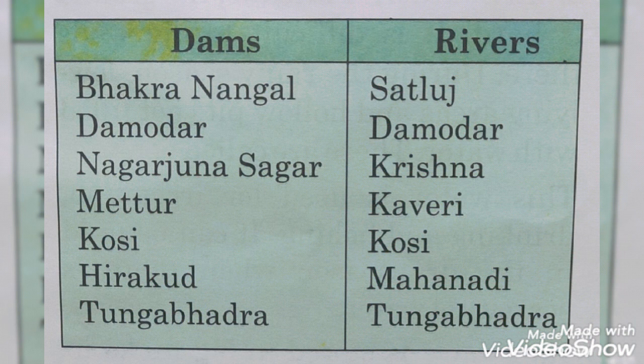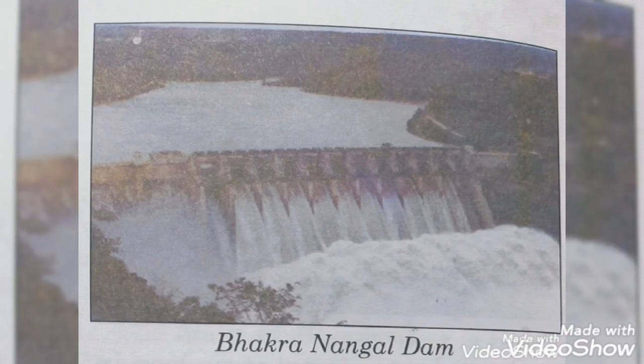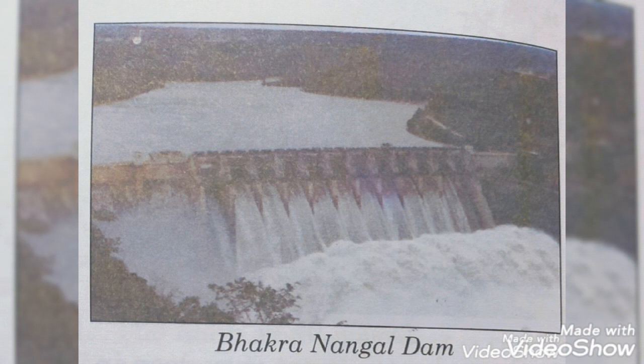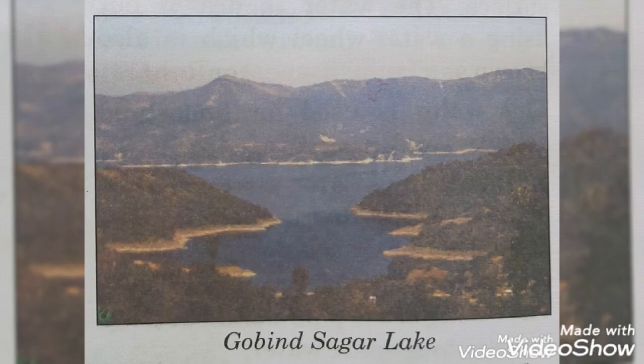Some important multipurpose projects of India are: The Bhakra Nangal project is the most important multipurpose project of India. The Bhakra Nangal Dam is built over the river Satluj. It is the biggest dam in India — 518 meters long and 226 meters high. It is also one of the highest dams in the world. It forms a huge lake behind it, called the Gobind Sagar Lake, which is the biggest artificial lake in the world. The project includes the Nangal Barrage in Punjab, with 4 power stations and about 1,100 kilometers of canals.